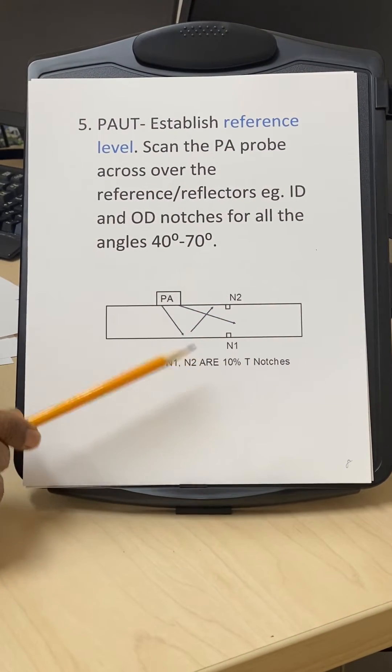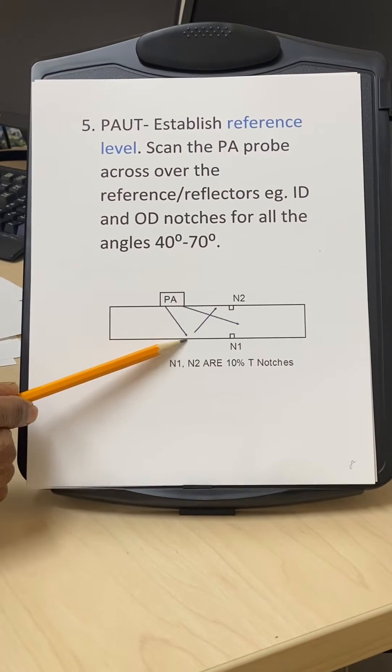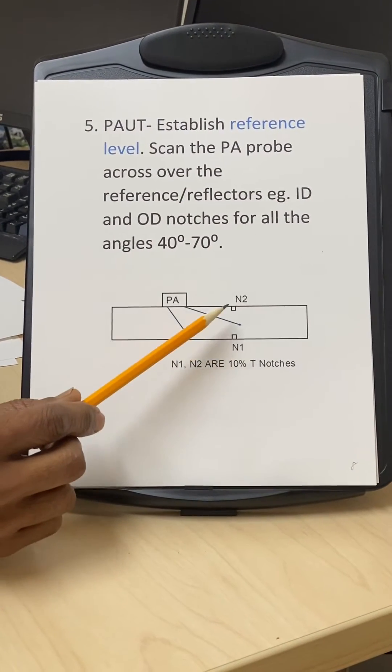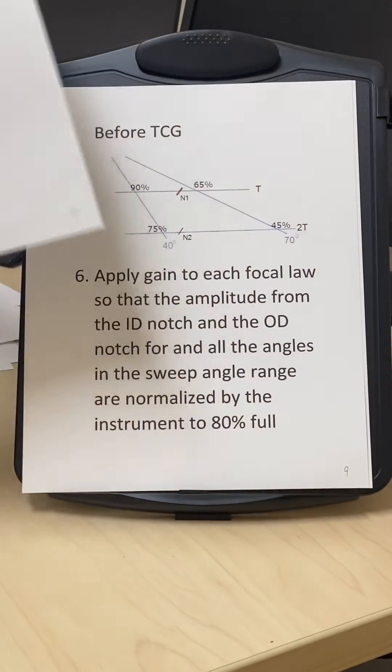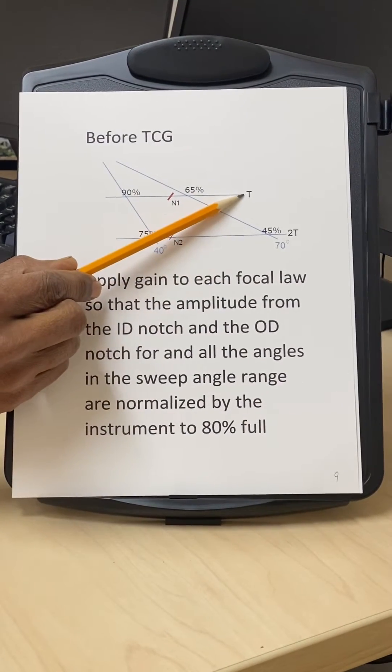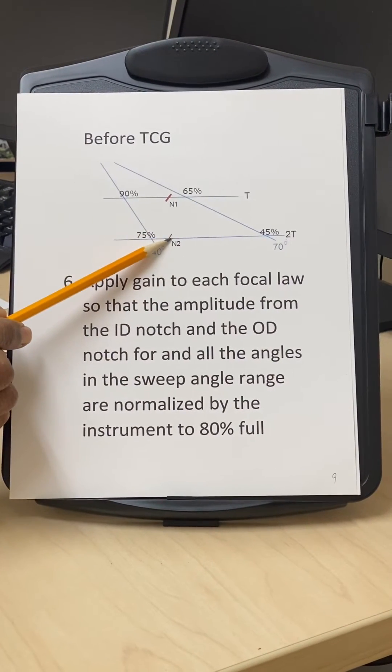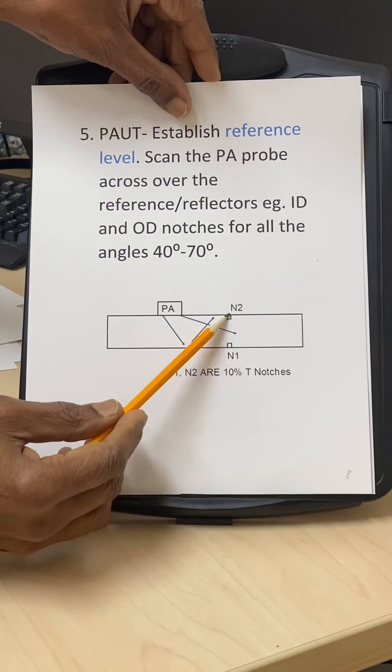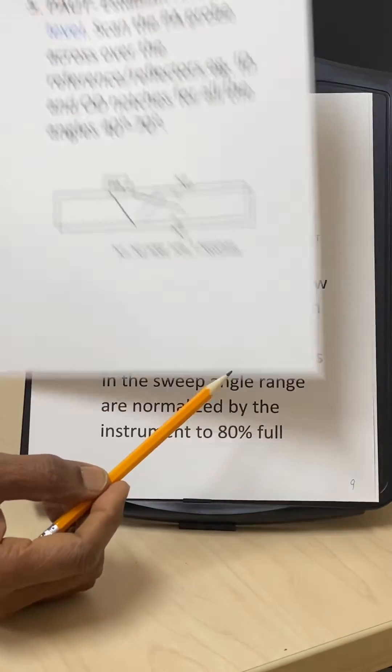Here is what we do for PAUT. The same calibration block, the PA probe is sitting here and now we are actually sweeping it from minimum angle to maximum angle. Then we get the signal from notch N1 and notch N2. This is T, which is the ID, and this is 2T, which is the OD. You can see the notch N1 is here and the notch N2 is here.